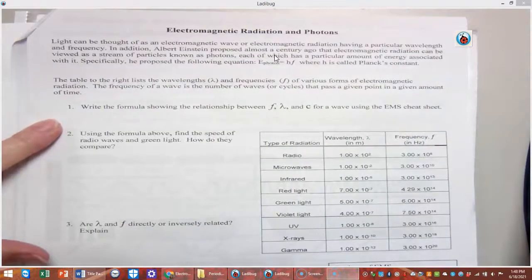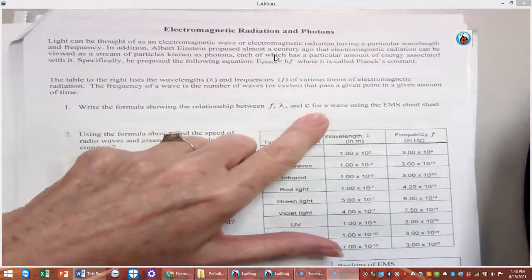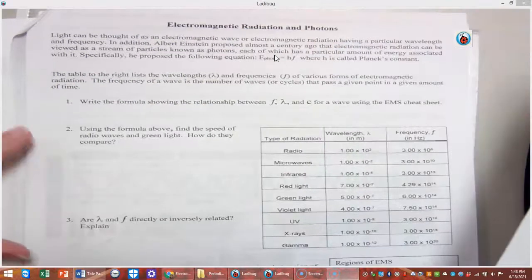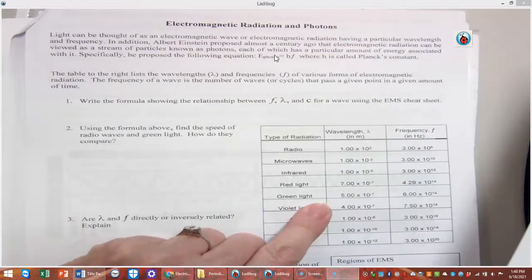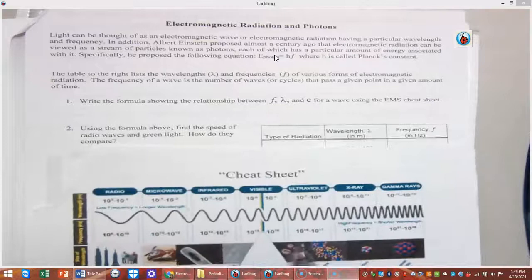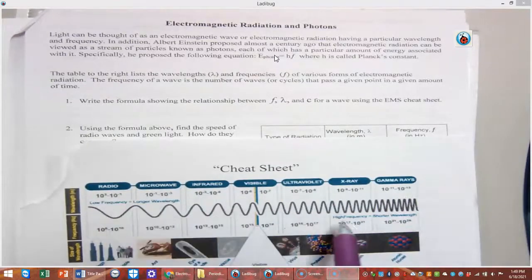So write the formula showing the relationship between frequency, wavelength, and speed of light, and all we have to do is copy down this formula here. And here, down here we've got a table with the list of the wavelengths and frequencies for the different types of electromagnetic radiation listed here on our cheat sheet.